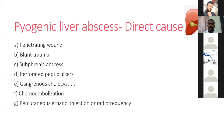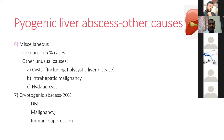Direct causes include penetrating wounds, blunt trauma, subphrenic abscess, perforated peptic ulcer, gangrenous cholecystitis, and following chemo-embolization or percutaneous ethanol injection. Cryptogenic abscesses account for about 20% of cases where no exact etiology is found; those patients often have diabetes mellitus, malignancy, or immunosuppression. In around 5% of cases there is no identifiable etiology.